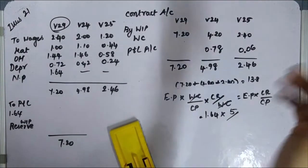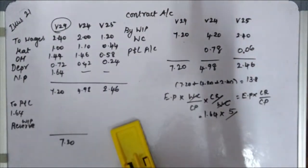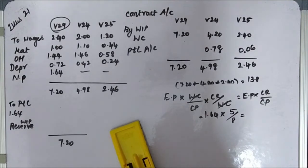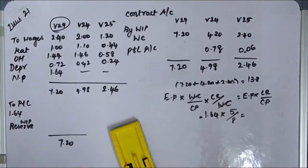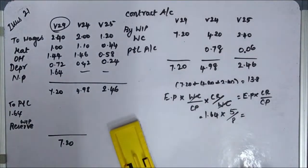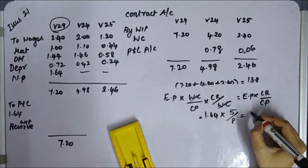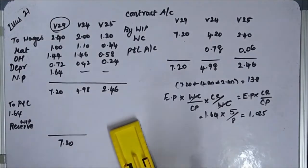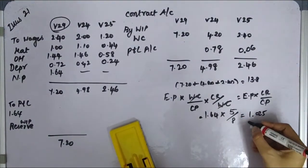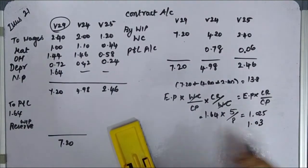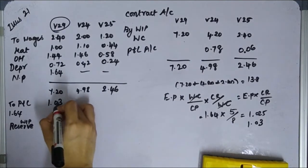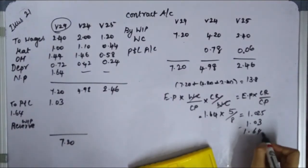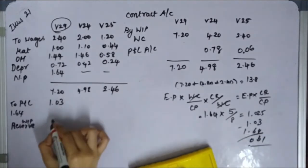The estimated final sales value is 8.79 lakhs at the top of the tabular column. Applying the estimated profit method: 1.4 into 5 gives approximately 1.025, rounded to 1.03. The amount equals 1.64 minus 1.03, giving 0.61. This 0.61 is transferred to the WIP reserve.